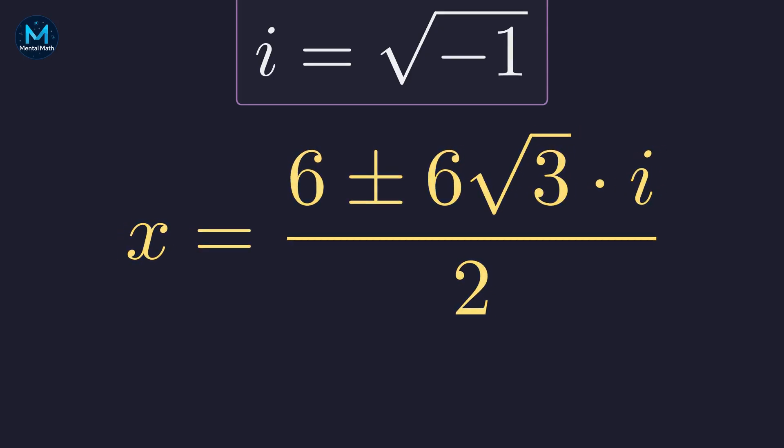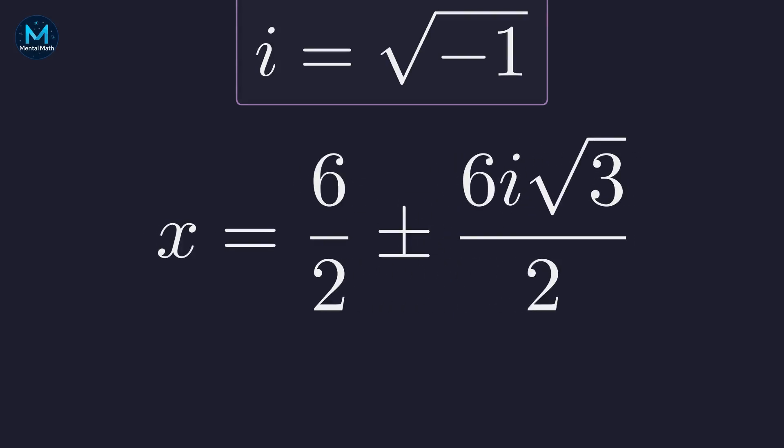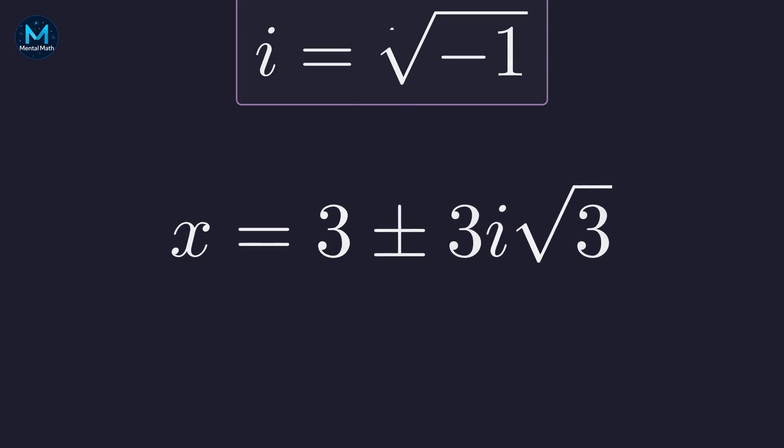Now we divide everything by 2, splitting into separate fractions, which simplifies to 3 plus or minus 3i root 3. These are our two complex solutions for x.